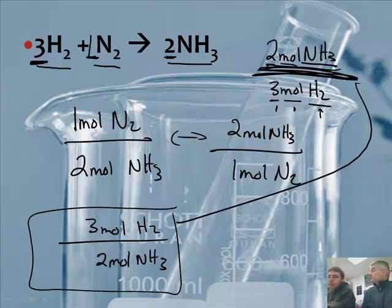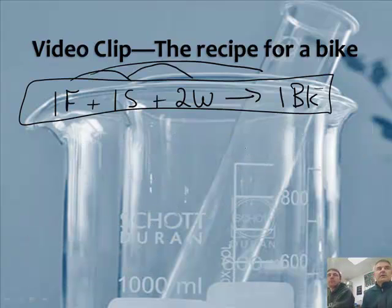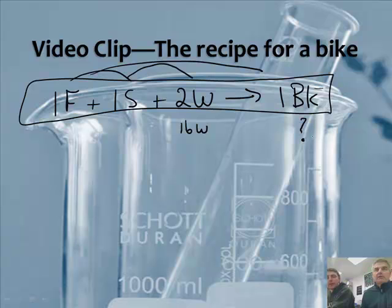We need these numbers if we're trying to predict how many bicycles we're going to make. So if I had 16 wheels, I could predict how many bicycles I could make. And then I could figure it out pretty easily. Actually, should we do that?